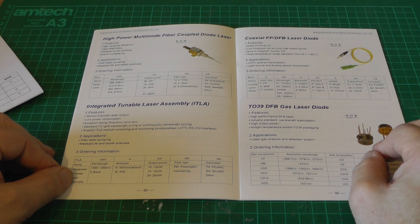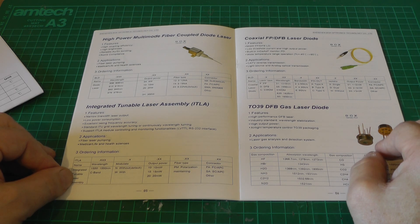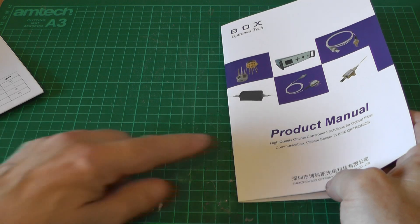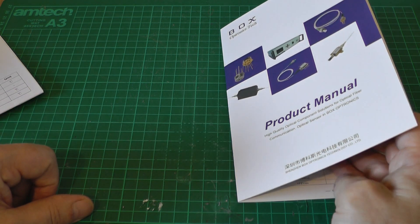So I was recently in the market for an 808 nanometer pump diode for an upcoming DPSS laser project. When I was looking around I found this company in Shenzhen, China, BoxOptronics Tech. I'll link them down below because they were really very helpful.